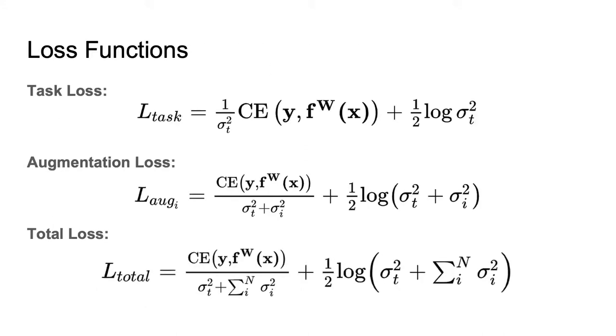So if we take our original Bayesian loss function and substitute in for the total variance, we arrive at the loss functions shown here. The first loss function, which is unchanged, we refer to as the task loss, as this learns the task uncertainty when provided with clean data. The second loss we refer to as the augmentation loss. When given artifacted images, the network learns both the task uncertainty and the uncertainty sigma i due to that specific artifact or augmentation. The final loss is a combined loss function, which attempts to learn all possible augmentation and task uncertainties.